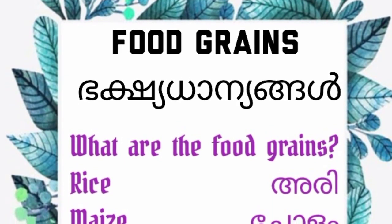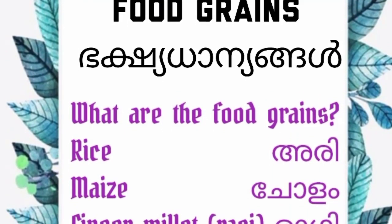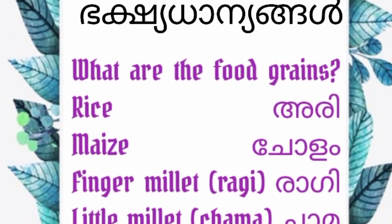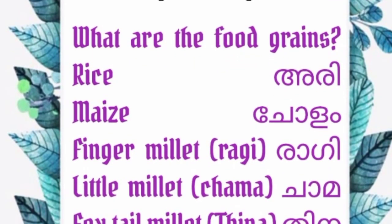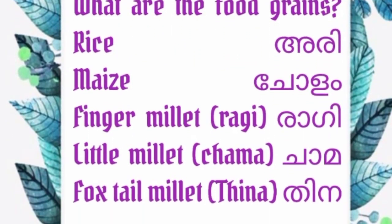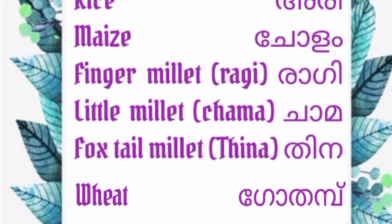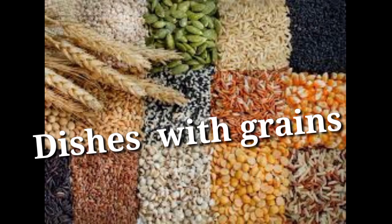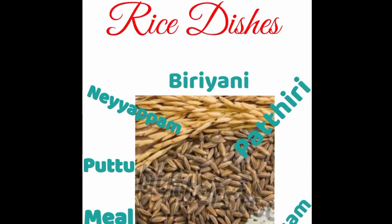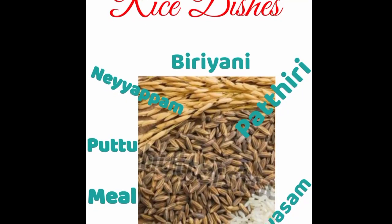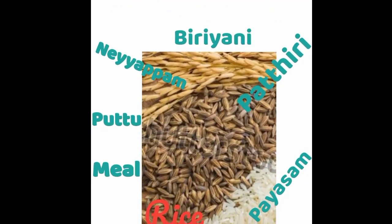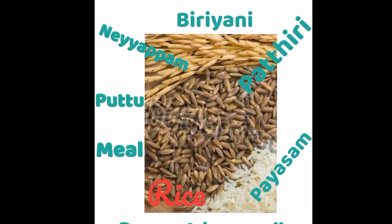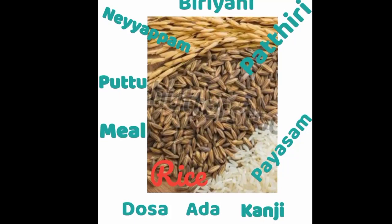What are the food grains? Rice, Maize, Finger Millet (Ragi), Little Millet, Foxtail Millet, and Wheat — these are examples of food grains. Various dishes can be made with these grains.